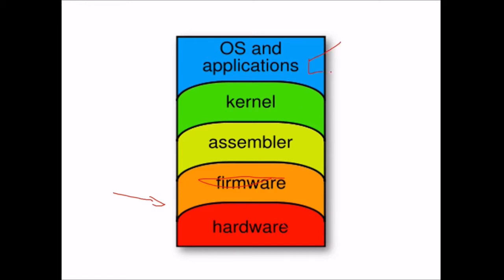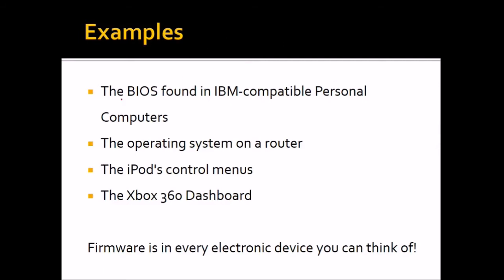Some firmware examples include system applications and operating systems. The BIOS — basic input output system — found in IBM compatible PCs is generally firmware. The OS on a router is also firmware. The menus found in your iPod are firmware, and the Xbox 360 dashboard is also an example of firmware. So firmware is in almost every electronic device you can think of.